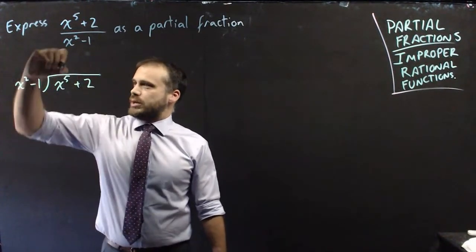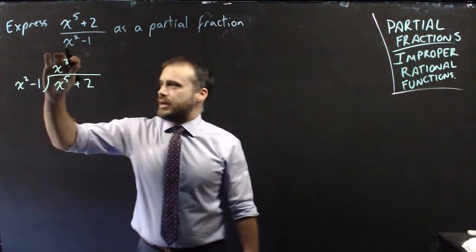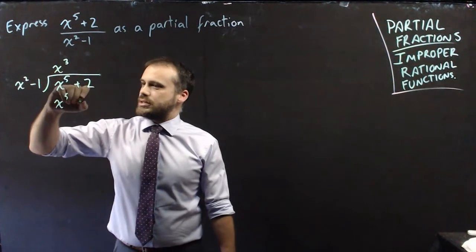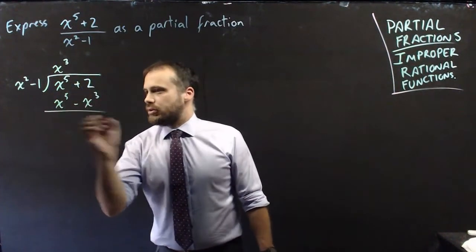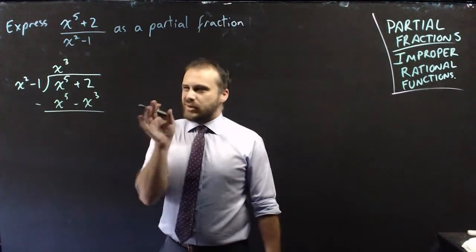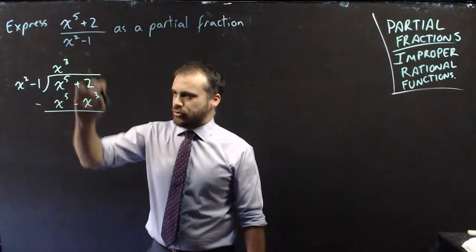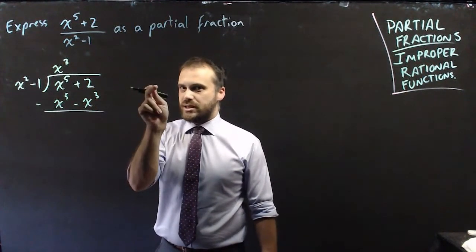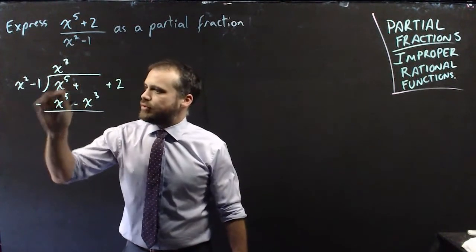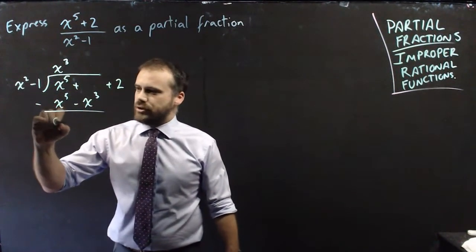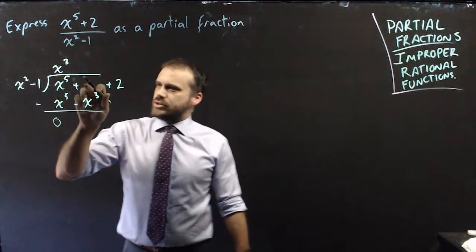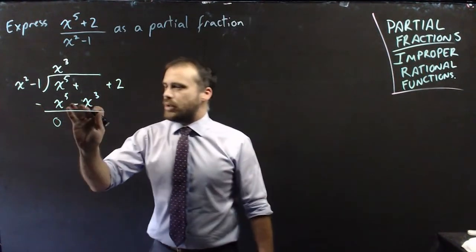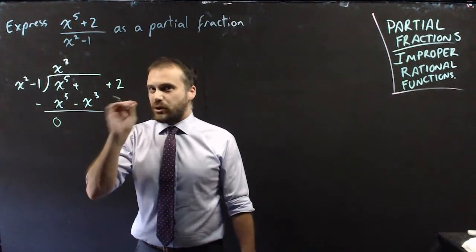x to the 5 divided by x squared is x to the 3. Now x cubed times x squared is x to the 5, and x cubed times negative 1 is negative x. Now we subtract one from the other. We can't subtract 2 from x cubed because they're not the same degree, so I'm just going to push that plus 2 over. x to the 5 minus x to the 5 is 0 — you'd always expect that. There's no x cubed term here, so we say 0x cubed. 0x cubed minus minus x cubed is positive x cubed.